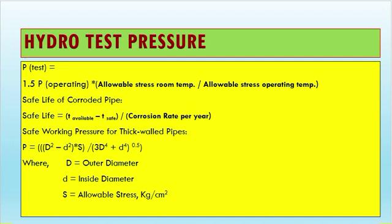For hydrotest pressure, the formula is: P = 1.5 × P_operating × (allowable stress at room temperature / allowable stress at operating temperature).